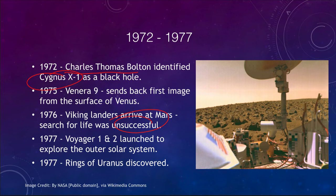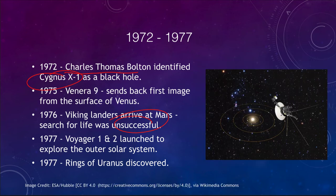In 1977, Voyager 1 and 2 were launched to explore the outer solar system. Voyager 1 would visit Jupiter and Saturn, while Voyager 2 would go on the grand tour — visiting Jupiter, Saturn, Uranus, and Neptune, giving us our only close-up knowledge to date of the two outermost planets in the solar system.